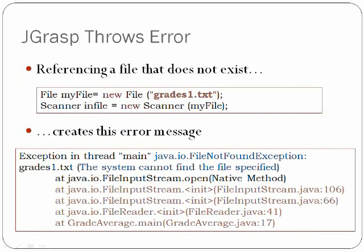An example of the Throws error from JGRASP. If you are referencing a file that does not exist, such as grades1.txt, it will create this error message when you try to compile the program.